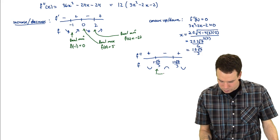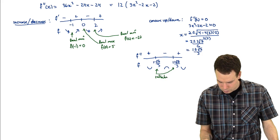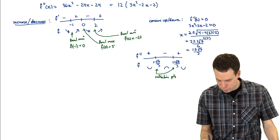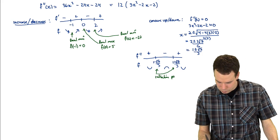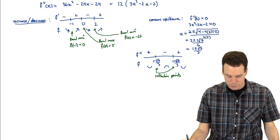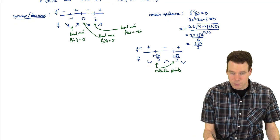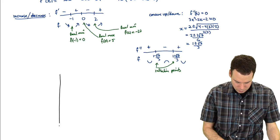Both of these are inflection points. Now we can take all of this information and use it to sketch the graph. What is our graph going to look like?